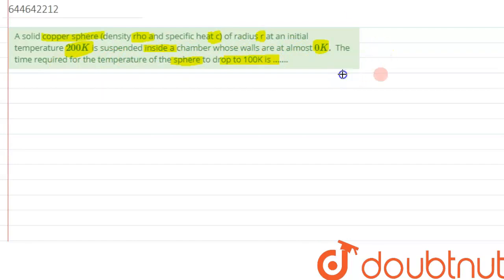So we have been given a scenario something like this: in the chamber, the wall of which is being maintained at zero kelvin, a sphere has been suspended whose initial temperature is 200 kelvin. We have to calculate that time when its temperature reduces to 100 kelvin. So this case is a case of radiation.